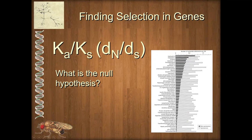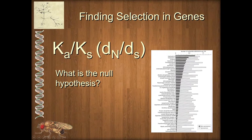To find whether natural selection is acting on genes, one of the most common methodologies is the KA-to-KS ratio or the dN-dS ratio. The KA-to-KS ratio is the unadjusted ratio — we measure all non-synonymous mutations versus all synonymous mutations and make a ratio. The dN-dS is a corrected version that adjusts for the number of possible non-synonymous and synonymous mutation sites, which can be complicated. From now on, we'll just use the dN-dS ratio.